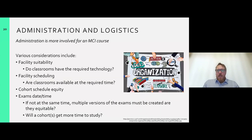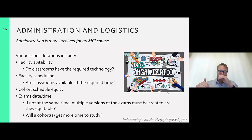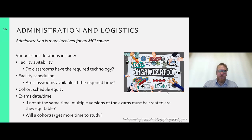Administration and logistics is a big thing: finding the right classrooms with the technology enabled in them, scheduling facilities, trying to maintain equity across cohort schedules. If one cohort is in a different time zone, their class might be late in the evening or early in the morning—not as equitable. And then exam times, as we've mentioned as well.